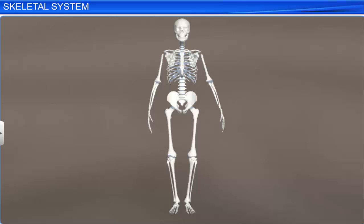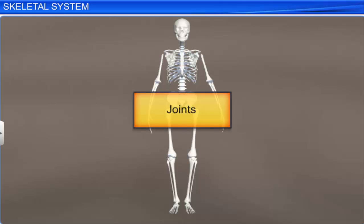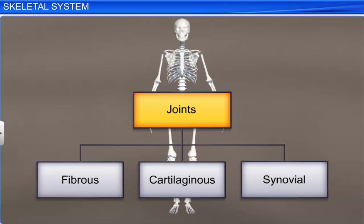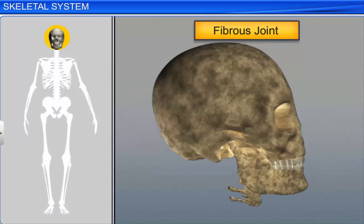Depending on how bones are connected to each other, joints are classified into three major types: fibrous, cartilaginous, and synovial. Fibrous joints do not allow any movement and are also referred to as immovable joints. For example, the cranial bones, which fuse end to end with the help of fibrous connective tissues, to form the cranium.